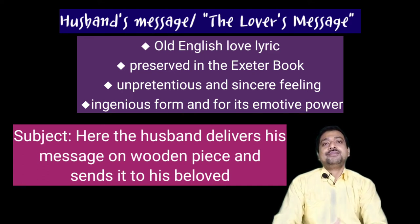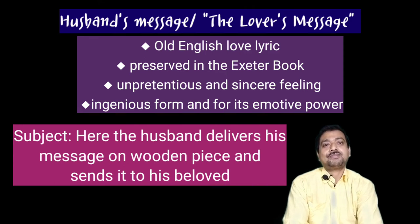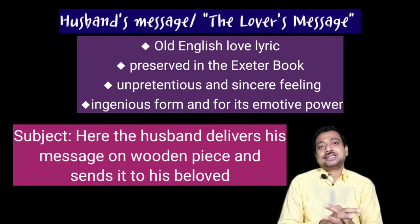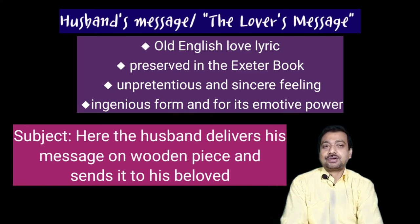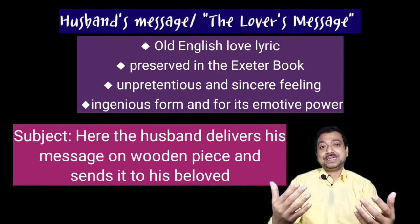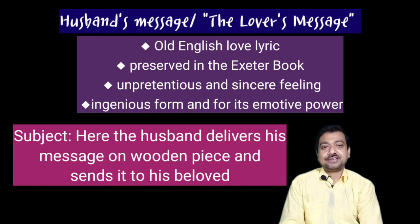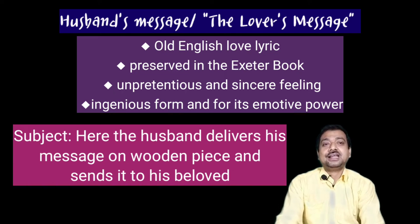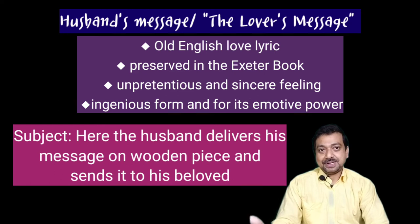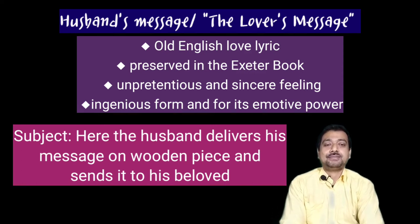Another notable love poem of this period is the Husband's Message, alternatively called The Lover's Message — one of the few surviving love lyrics of the Anglo-Saxon period, preserved in the Exeter Book. The husband delivers his message on a wooden piece, floats it on the sea, and that wooden piece conveys his unpretentious and sincere feelings. It is remarkable for its ingenious exhibition and emotive power, telling in a simple way how much he loves his wife. So it is a counterpart to the Wife's Complaint.